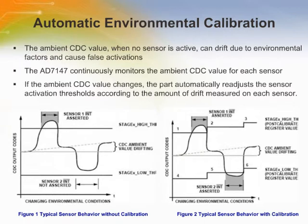The CDC provides on-chip capacitance sensor calibration to automatically adjust for environmental conditions that affect the ambient levels of the capacitance sensor. The output levels of the capacitance sensor are sensitive to temperature, humidity, and in some cases, dirt. The AD7147 achieves optimal and reliable sensor performance by continuously monitoring the CDC ambient levels and compensating for environmental changes by adjusting the values of the stage X high threshold and stage X low threshold registers. Figure 1 shows typical behavior without calibration, while Figure 2 shows how the AD7147's adaptive calibration process results in no interrupt errors even with changing ambient levels.